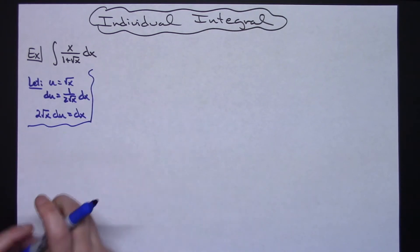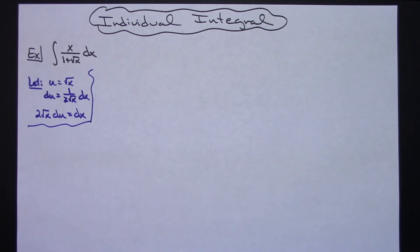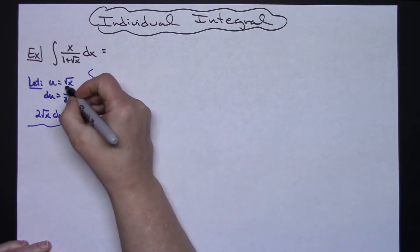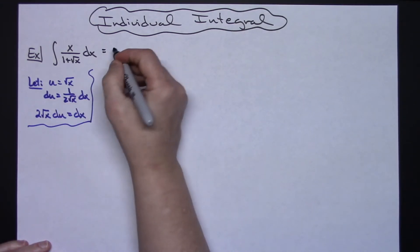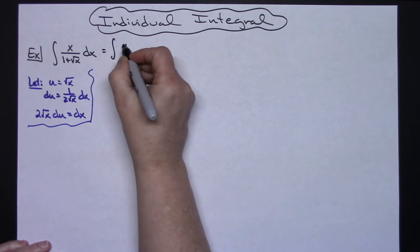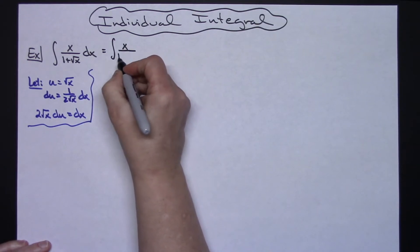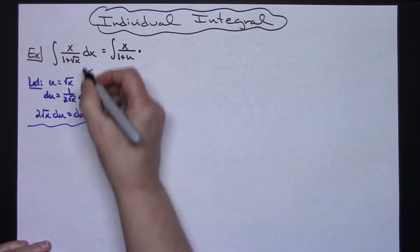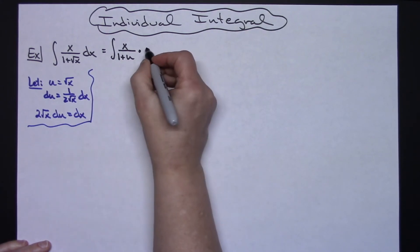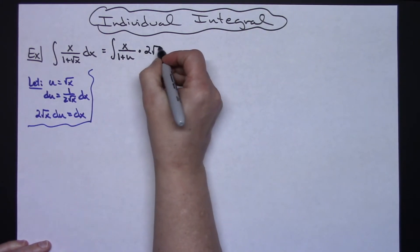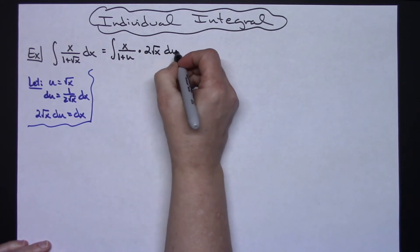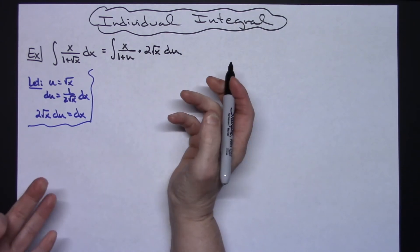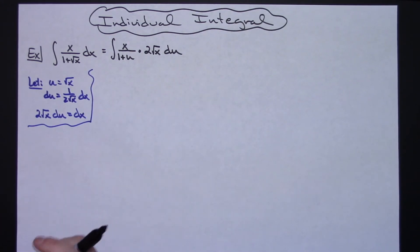Now I would start replacing. Initially you might just go ahead and substitute u for square root of x in the denominator, leaving x at the top and replacing dx with 2 square root of x du. But then you'll notice that not all the x's canceled out, so there's still a problem.